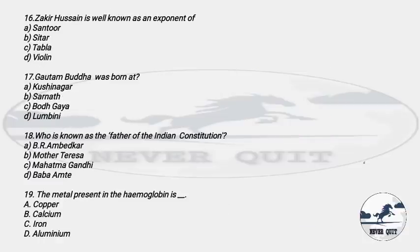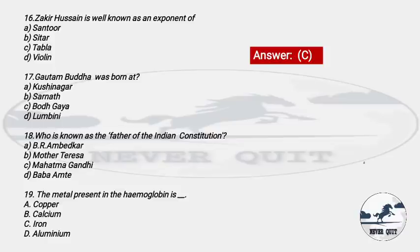Question 16: Zakir Hussain is well known as an exponent of which musical instrument? Options: A) Santur, B) Sitar, C) Tabla, D) Violin. The right answer is option C — Tabla. Zakir Hussain is a famous tabla player. You may have seen him in the Taj Mahal Tea advertisement.